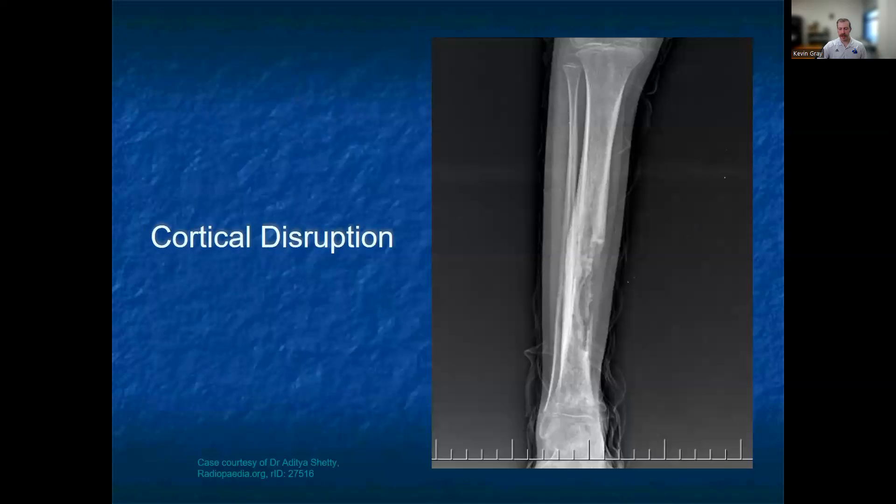Finally, as in this image, we can see full cortical disruption, where you lose and obliterate the signal of the typical cortex of the bone.